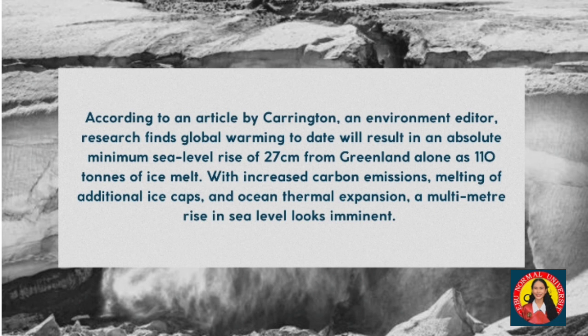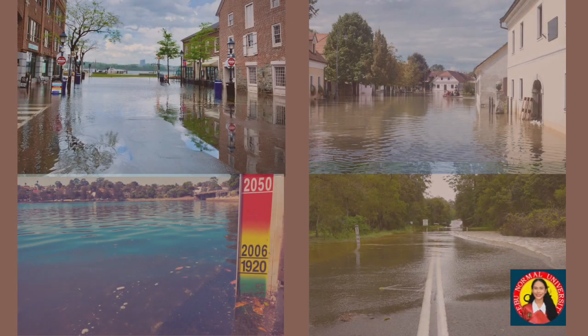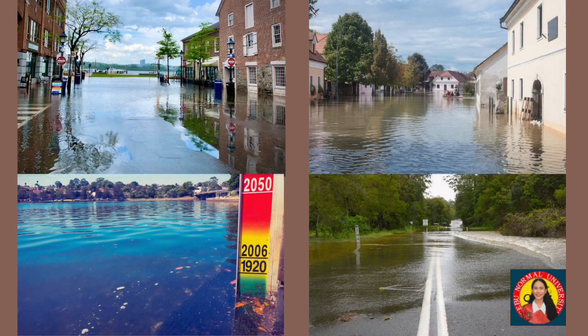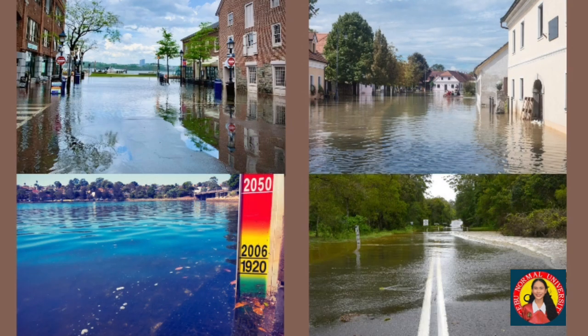With increased carbon emissions, melting of additional ice caps, and ocean thermal expansion, a multi-meter rise in sea level looks imminent. Flooding caused by increasing sea levels is one of the most serious long-term consequences of the climate problem, affecting billions of people. The Greenland ice sheet is currently the main factor in swelling the Earth's oceans, according to NASA, with the Arctic region warming at a faster rate than the rest of the planet.